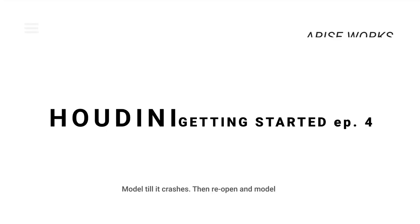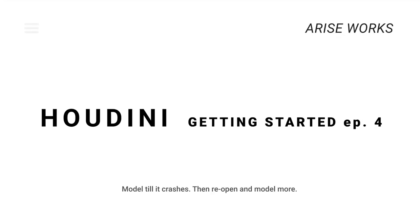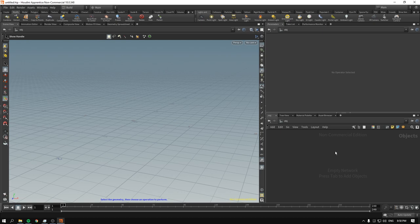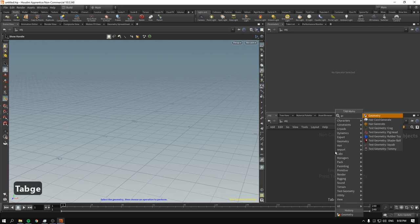Hello, welcome back. This is Ariseworks and this is episode 4 of the Getting Started with Houdini workshop. This video will be about modeling operations: working with extrusions, poly bevel, polywire, and other things that will be useful for creating geometry. Let's see what we can do.